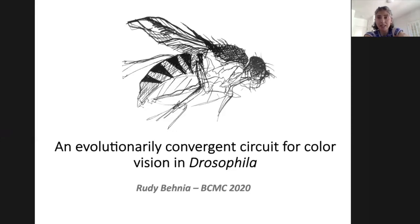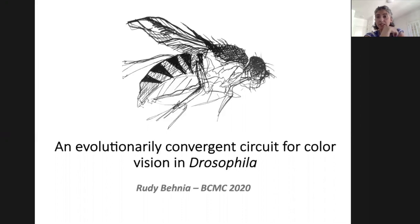I'm interested in neural circuit mechanisms that process visual information. In my lab, we use the fly visual system as a model to study various aspects of vision at the level of single cells and small neural circuits. Today I'll be focusing on the question of how we perceive color.